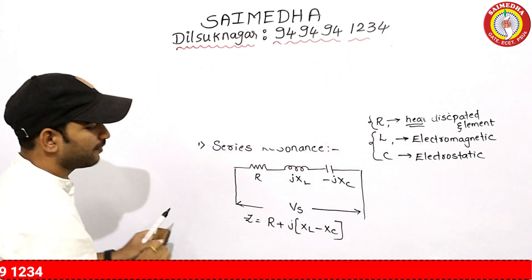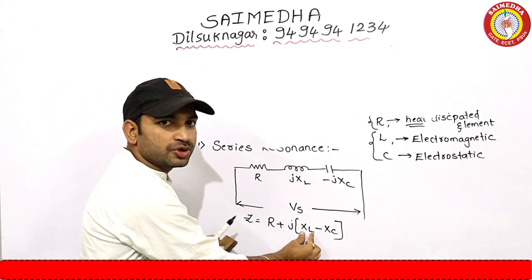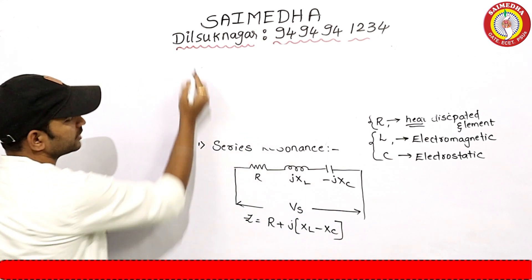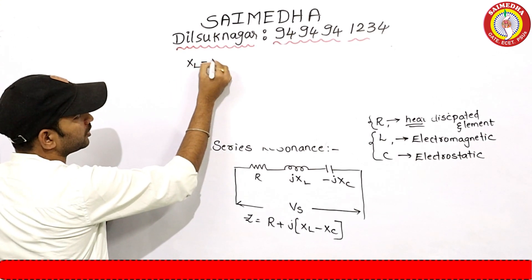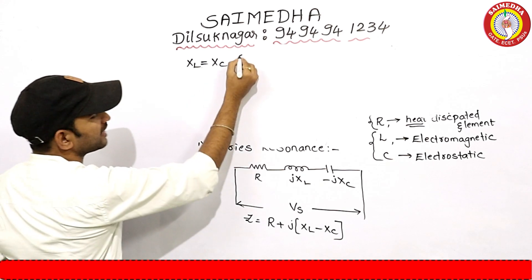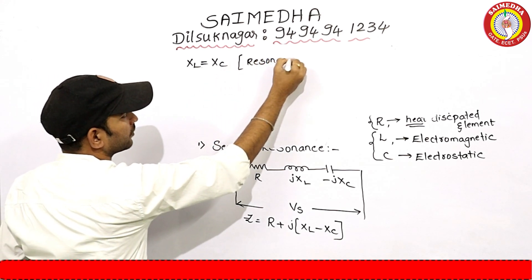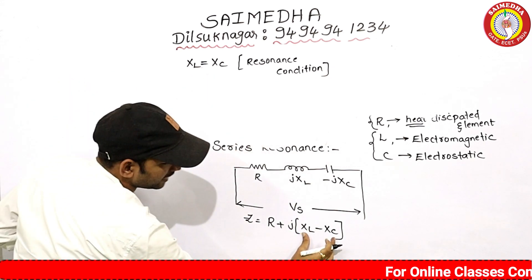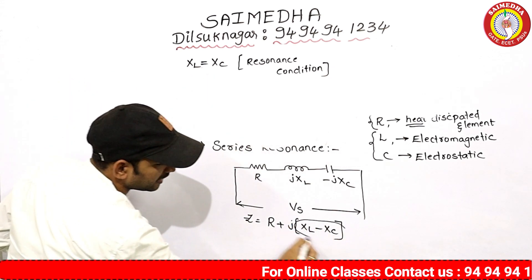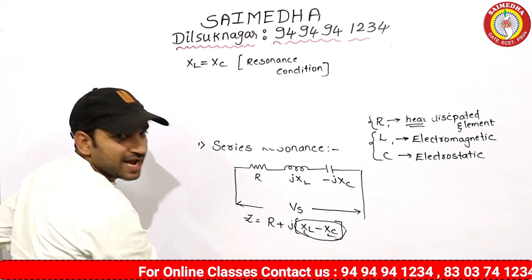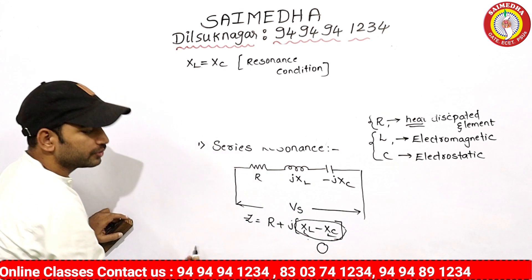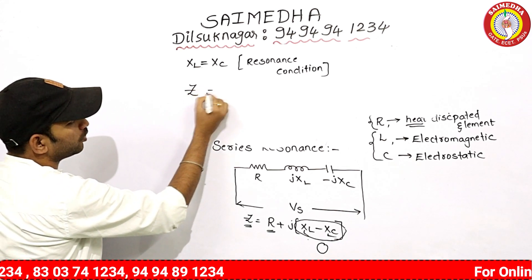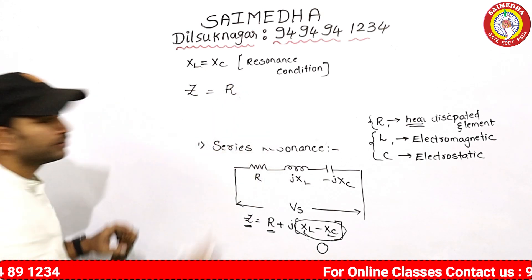Now let's talk about the resonance condition. The energy stored by the inductor equals the energy stored by the capacitor. The resonance condition is XL equal to XC. When XL equals XC, the inductive reactance and capacitive reactance cancel, so the imaginary part is equal to zero. Therefore, impedance is equal to zero for the reactive part.